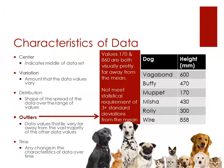Outliers are data values that lie very far away from the vast majority of the other data values, and we'll be looking at these several times during the semester. In this sample data set, the values 170 and 858 appear very far away from the mean. However, they do not actually meet the statistical requirement of being 3 or more standard deviations from the mean, so in this current data set, we actually do not have outliers.